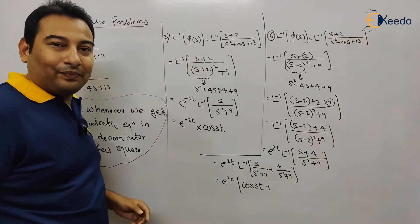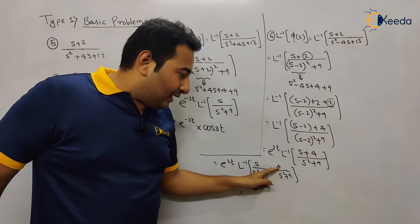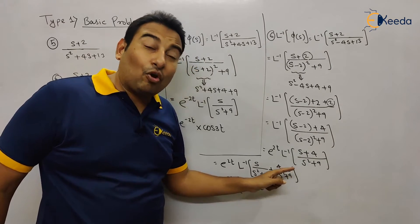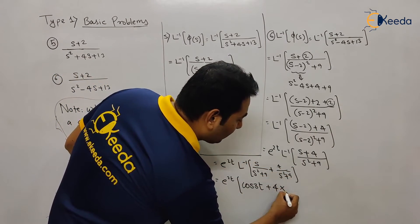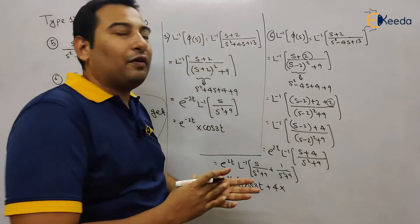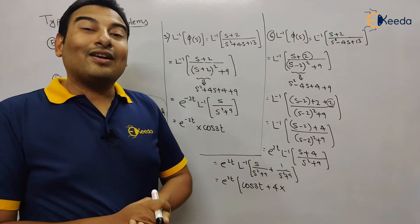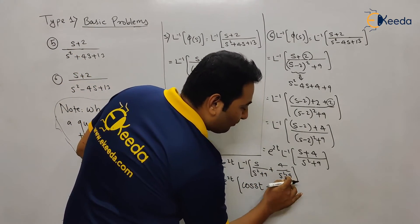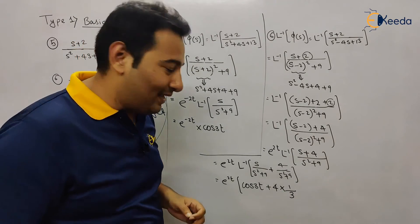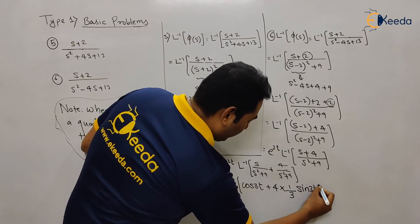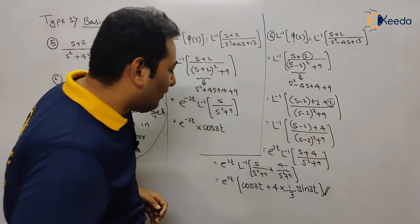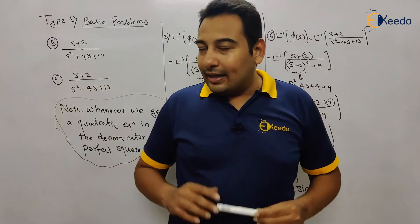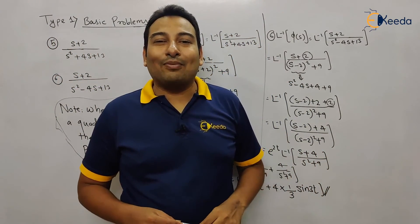For 4/(s²+9): if it were a/(s²+a²), that formula gives (1/a)sin(at). Here it is 4, so 4 comes out, and you're left with 1/(s²+9). That is (1/a)sin(at) — where a²=9 so a=3 — giving (1/3)sin(3t). So the final answer is e^(2t) times [cos(3t) + (4/3)sin(3t)]. Problem number 6 is done. In the next video we'll discuss a few more examples. Thank you.